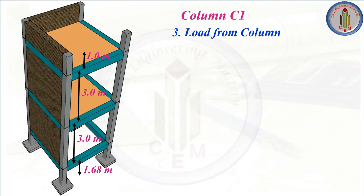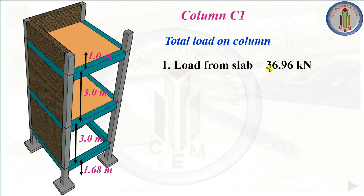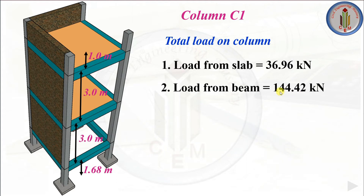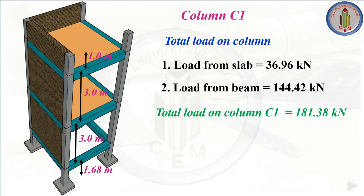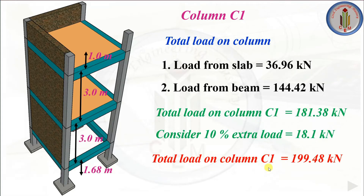Finally, we need the self-weight of the column, calculated as the column cross-section size multiplied by total floor height multiplied by 25 kN/m³. Since we don't yet know the column size, instead of that, let's consider 10% extra load. Load from slab is 36.96 kN; load from all beams combined is 144.42 kN; total load is 181.38 kN. Adding 10% gives 18.1 kN, so the grand total is 199.48 kN — let's consider 200 kN for column C1.